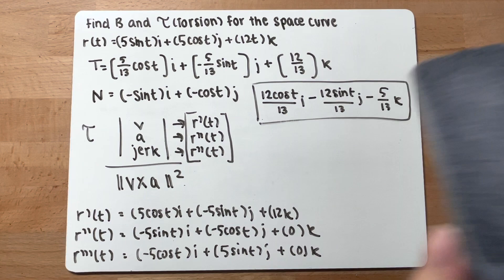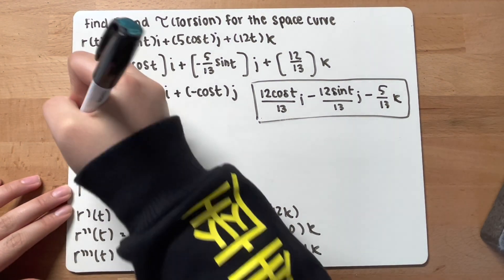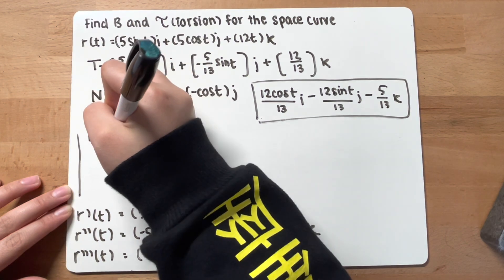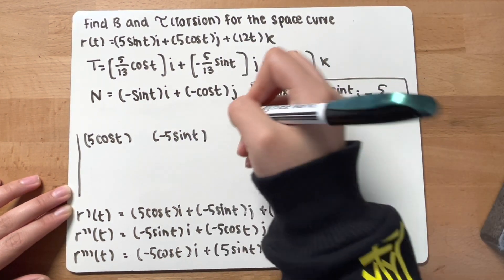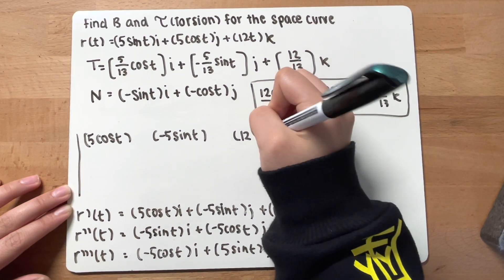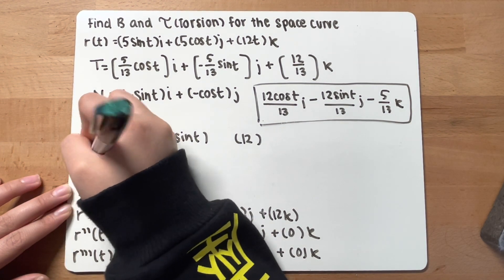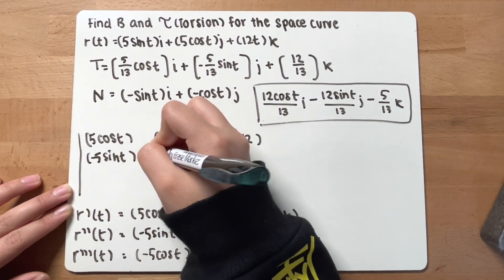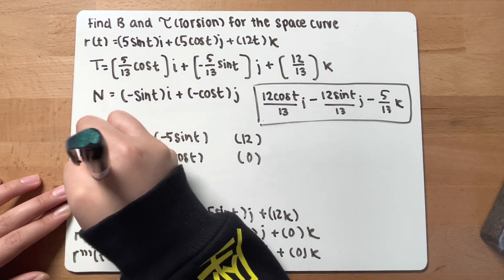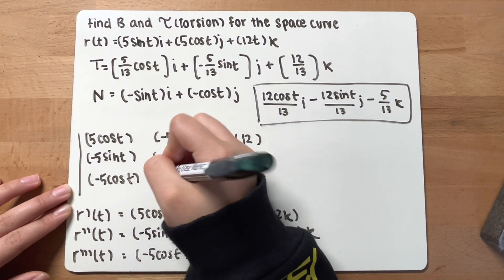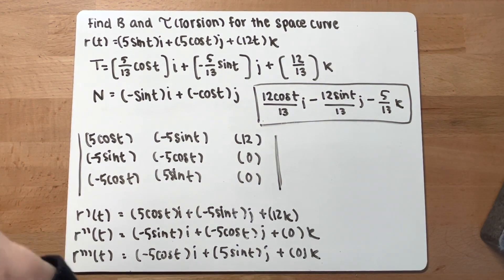Now we can write this into cross product format. You have 5 cos t, negative 5 sin t, and 12 in the first row. Then negative 5 sin t, negative 5 cos t, and 0. And last, negative 5 cos t, 5 sin t, and 0. This is our cross product layout for the triple product.